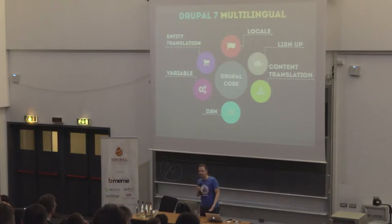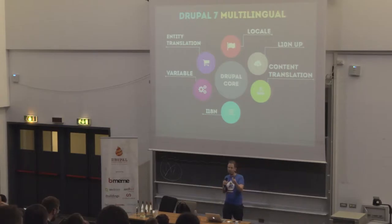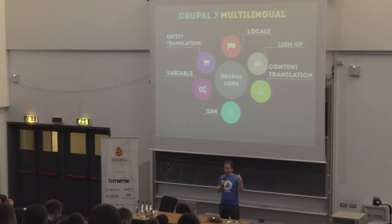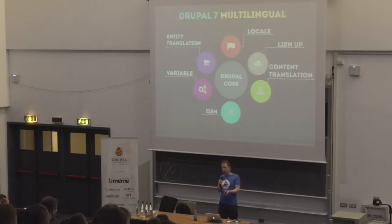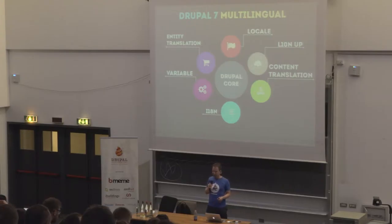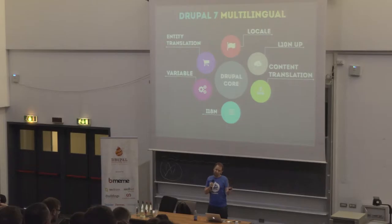That's a mess to develop for because module developers would need to understand Content Translation as different from NDD Translation, and i18n's taxonomy translation as different from NDD Translation's taxonomy translation. Contributed modules probably ignore the whole thing because it's just confusing. So what we're going to do in Drupal 8 is make it simple for site builders and for developers, and have a deep understanding of language inside the system.